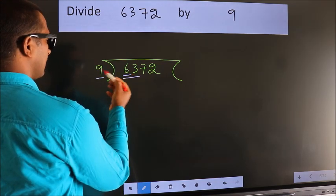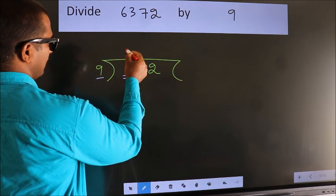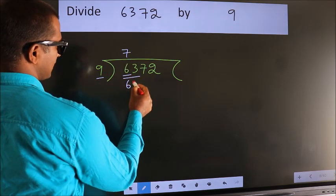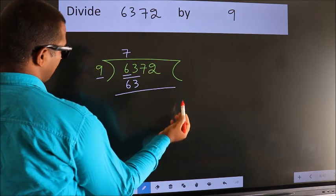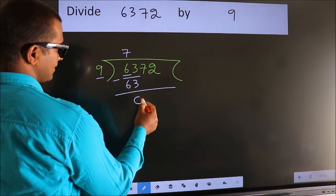When do we get 63 in 9 table? 9 times 7 is 63. Now, we should subtract. We get 0.